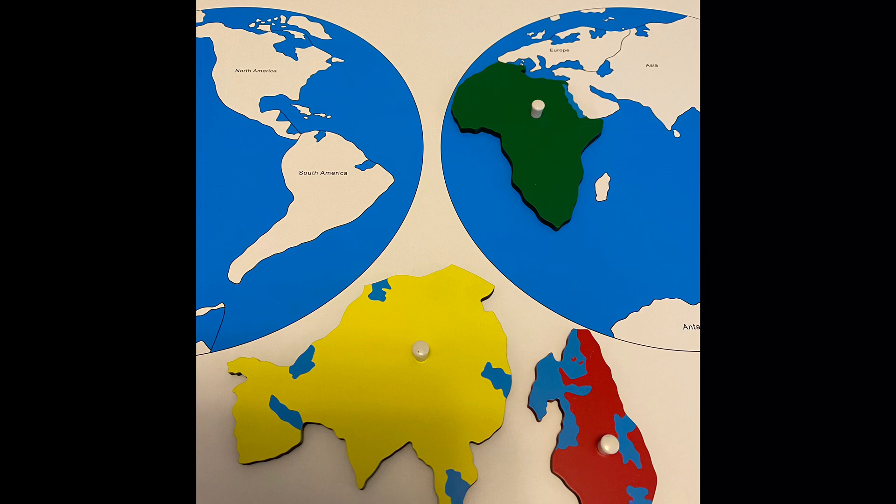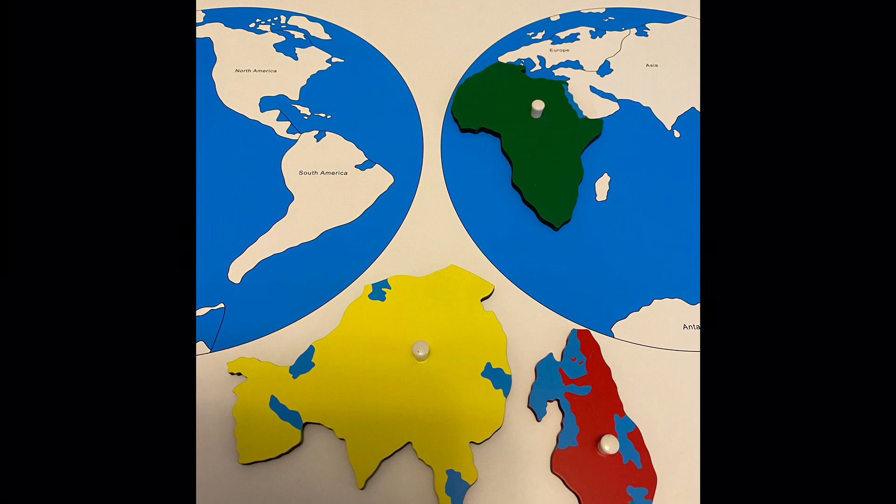Explain to the child that every continent has a name and point to each one on the puzzle map, then name it. The names of the continents are North America, South America, Europe, Asia, Africa, Australia, and Antarctica.